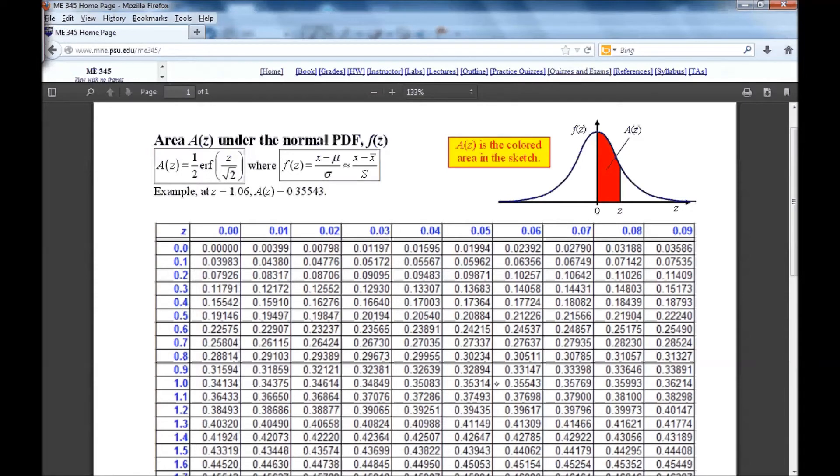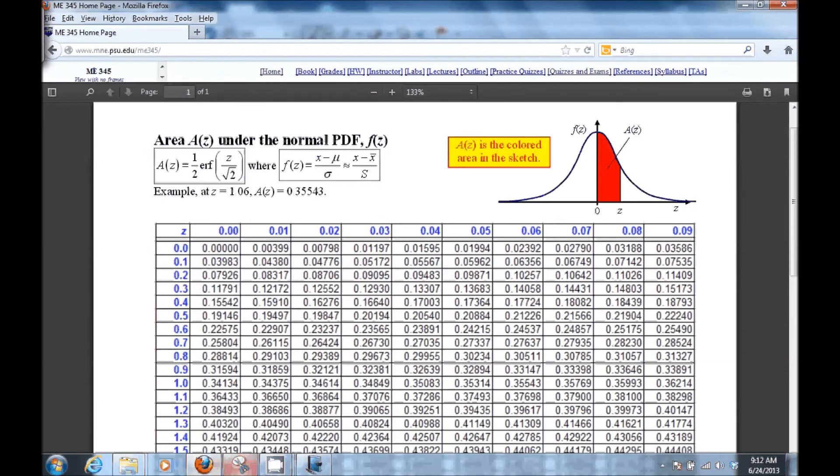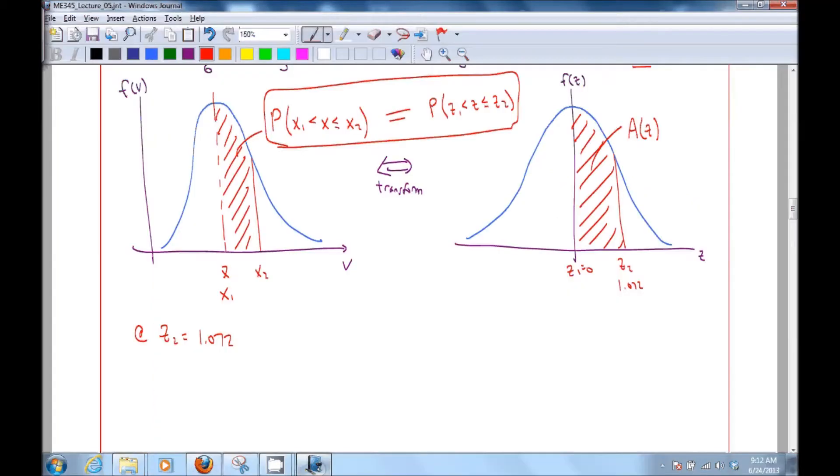Our Z is 1.072. So here's 1.0. We go over to the 7. So 1.072 is in between these two values. We interpolate. I just use linear interpolation. And we get a value that is equal to 0.3581.